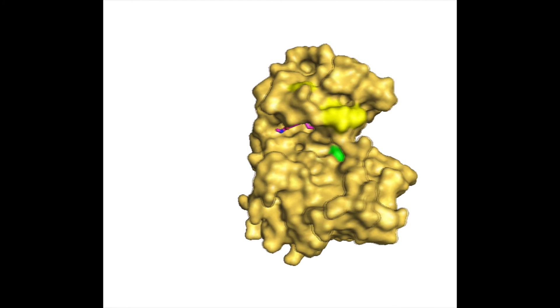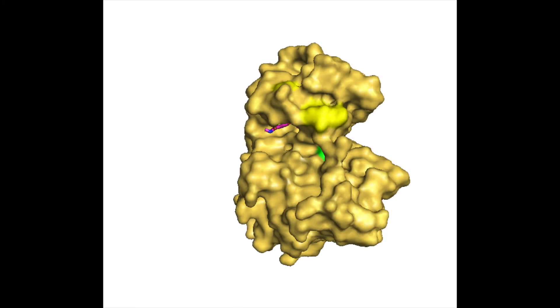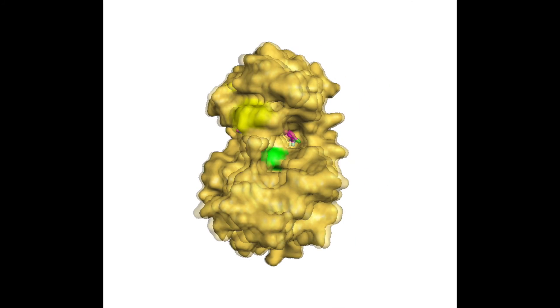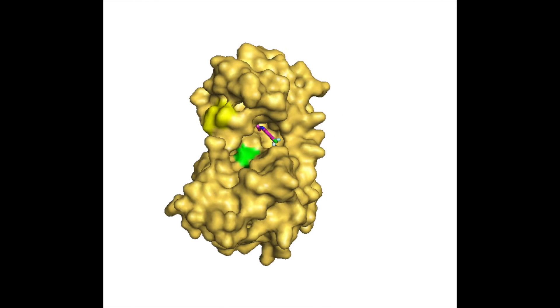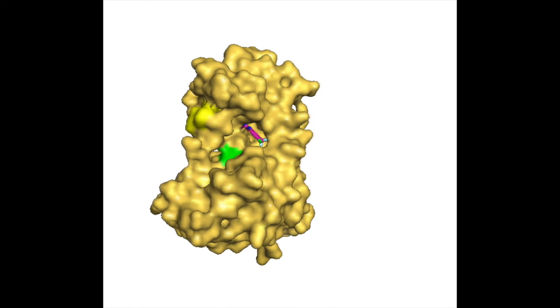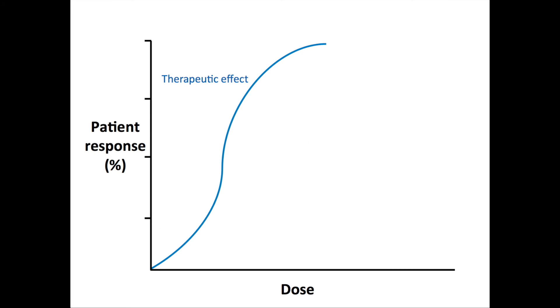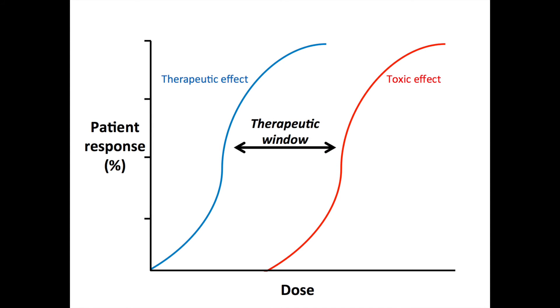These inhibitors have a higher affinity for mutated BRAF in comparison to wild-type BRAF. Because of this, these inhibitors bind mostly to V600E BRAF while minimally affecting wild-type BRAF. This allows for high exposures of the drug while avoiding toxic side effects of BRAF inhibition, giving the drug a large therapeutic window.